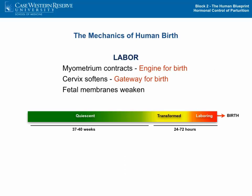For most of human pregnancy, the uterus is maintained in a quiescent state — it's not contracting, it's growing to accommodate the developing fetus, and the cervix is closed and rigid, housing the fetus for 37 to 40 weeks.